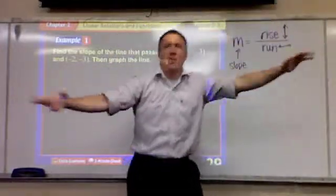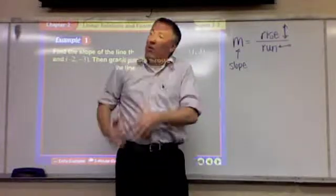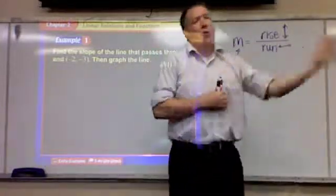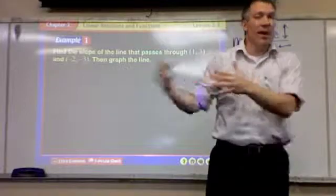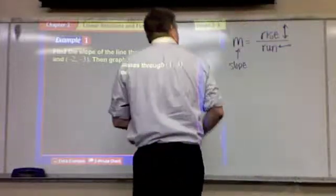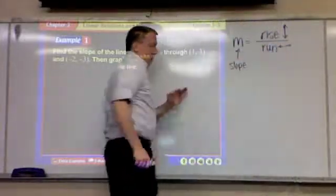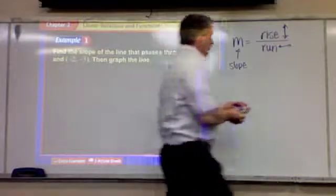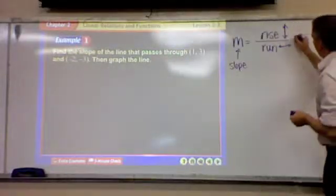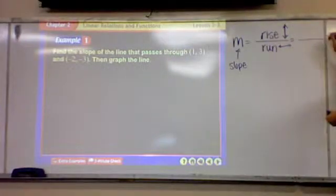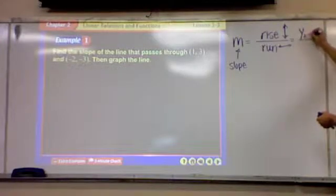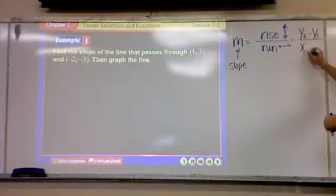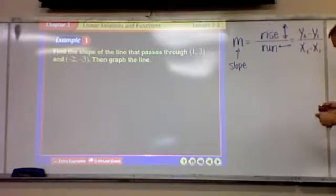Run is horizontal. And it refers to, again, we don't just say how far it is, we say which way you went. Did you go left? Did you go right? So, we have an up, down, and a left, right component. And in mathematical terms, this is the way it's written. Y2 minus Y1 over X2 minus X1.